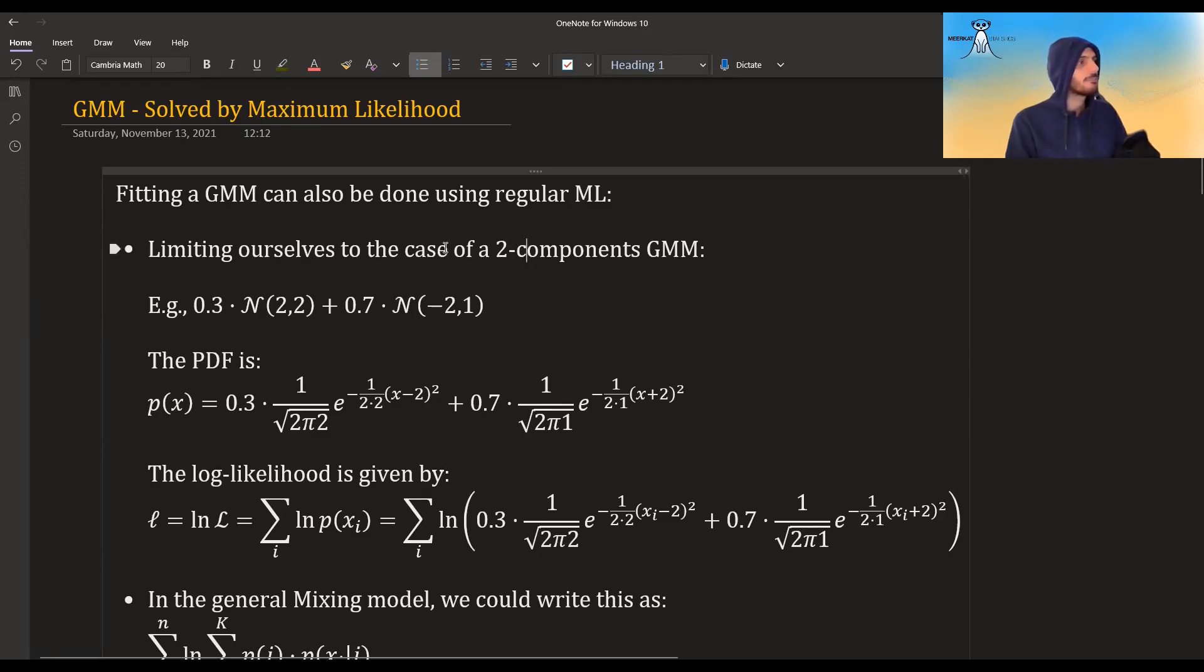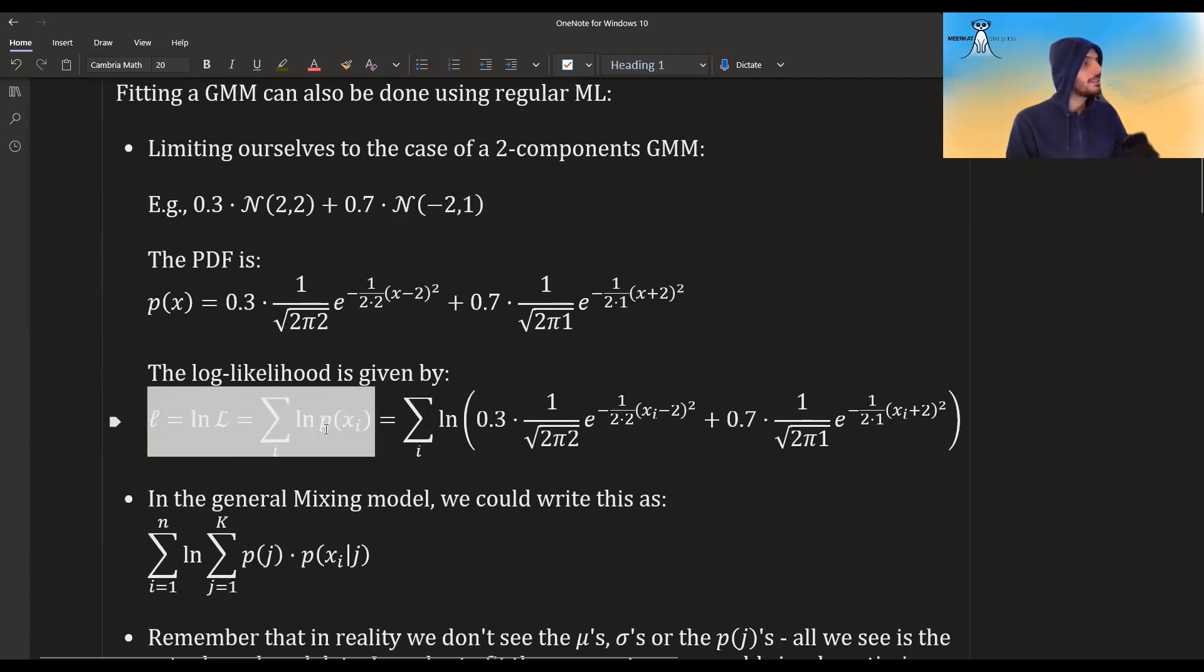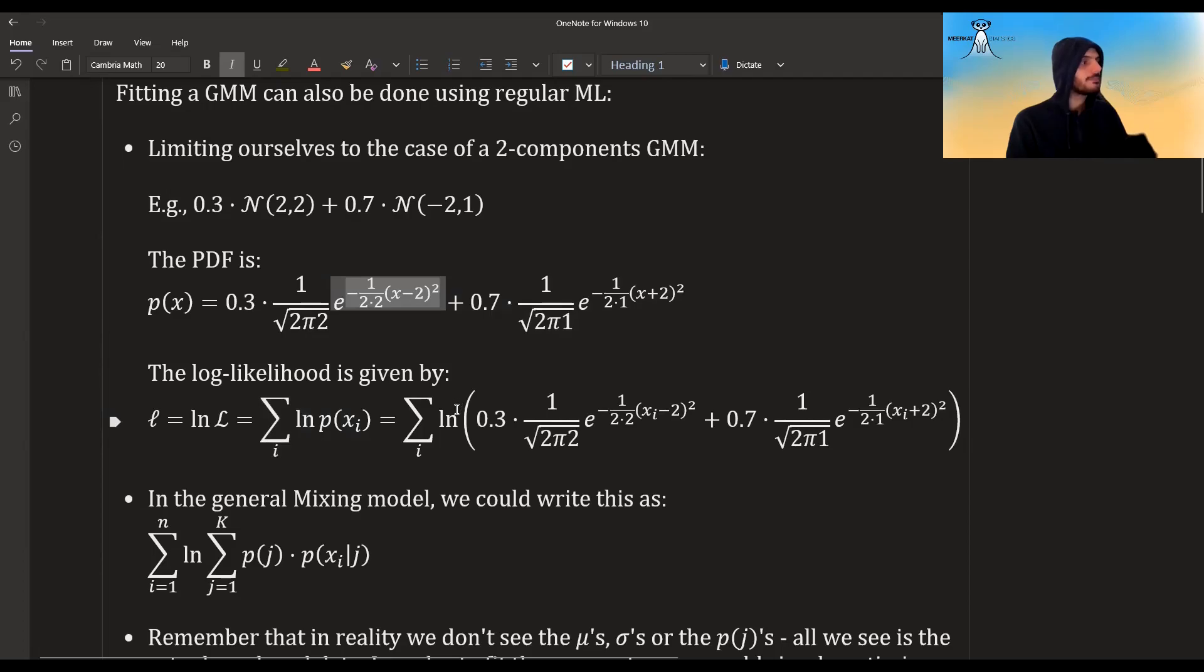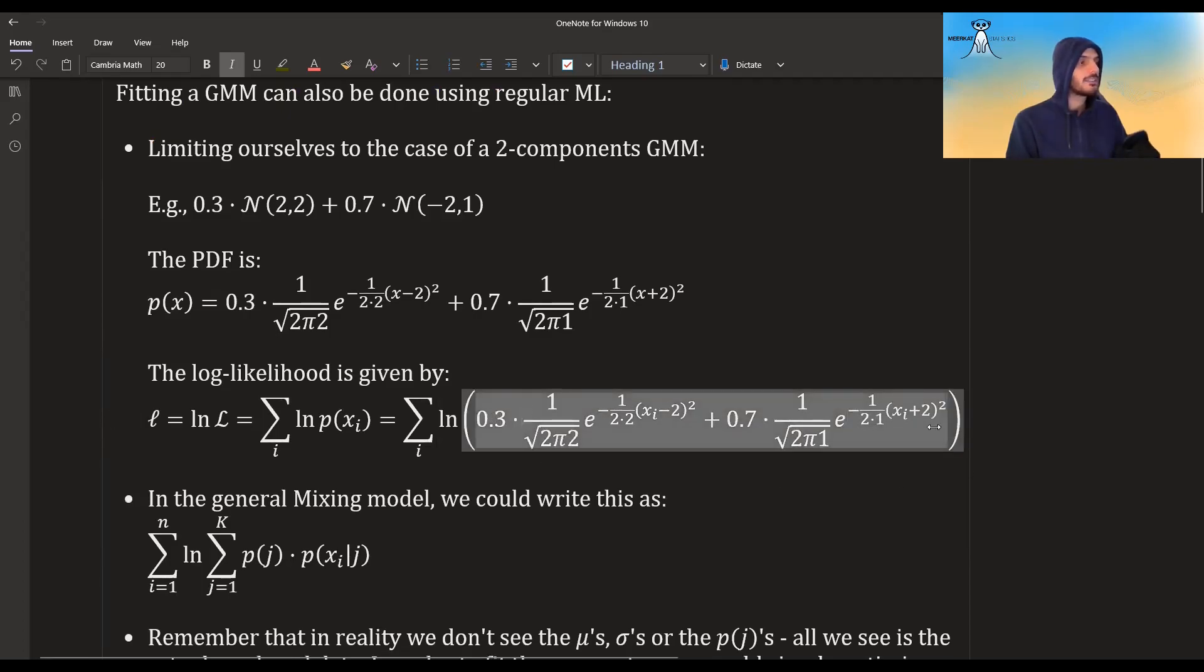So let's take a concrete example, let's limit ourselves to the case of two components in a one-dimensional data. Suppose this is our mixture, 0.3 times the normal distribution with a mean of 2 and a variance of 2, and 0.7 times the normal distribution centered around minus 2 and a variance of 1. So the PDF of this would look like this, and the log likelihood is just the sum over all observation of the log of this. And if we plug it in, it just comes out to be this expression. You can see it's a bit annoying because we have a log and inside the log we have a sum.